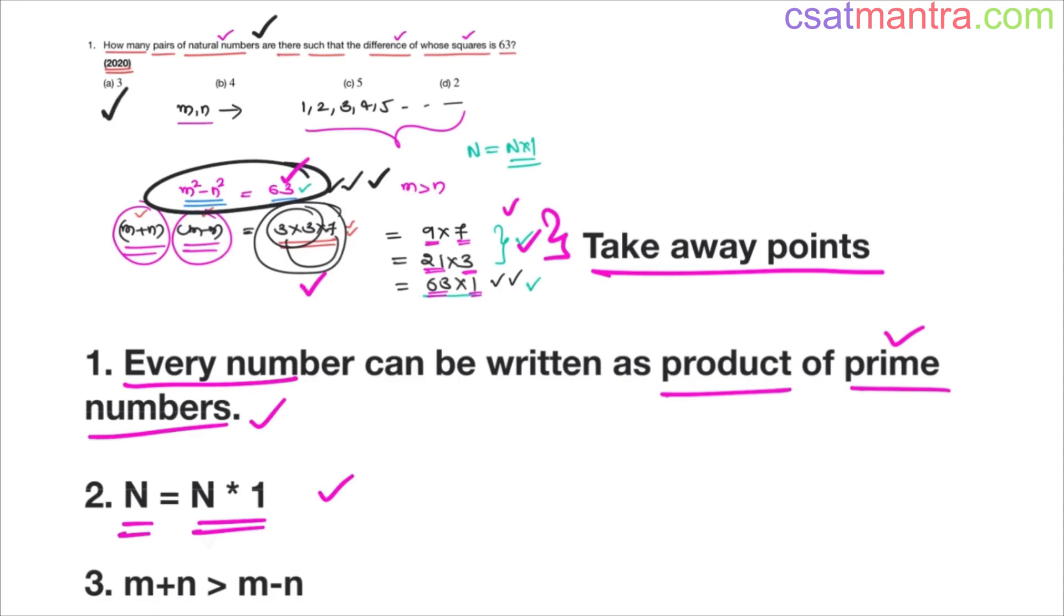When it comes to this problem, m plus n is greater than m minus n. This is common sense, because sum is greater than their difference, right?